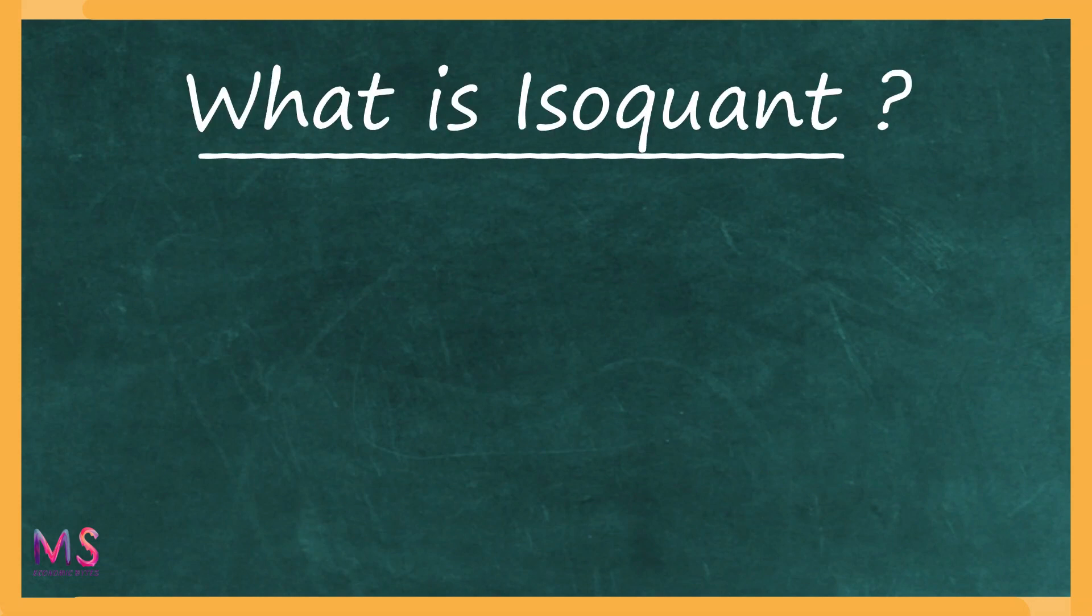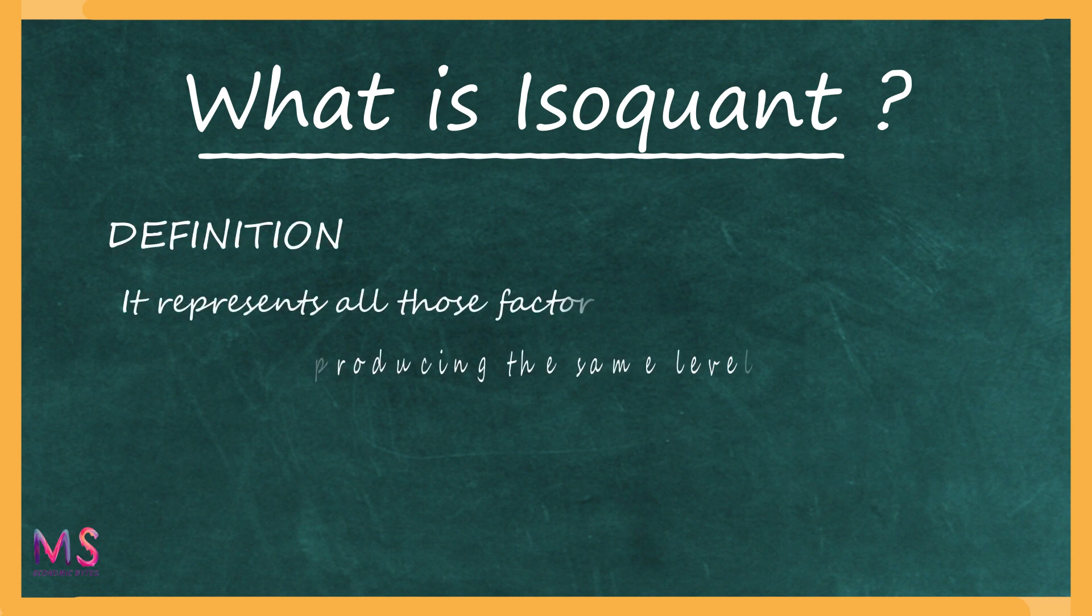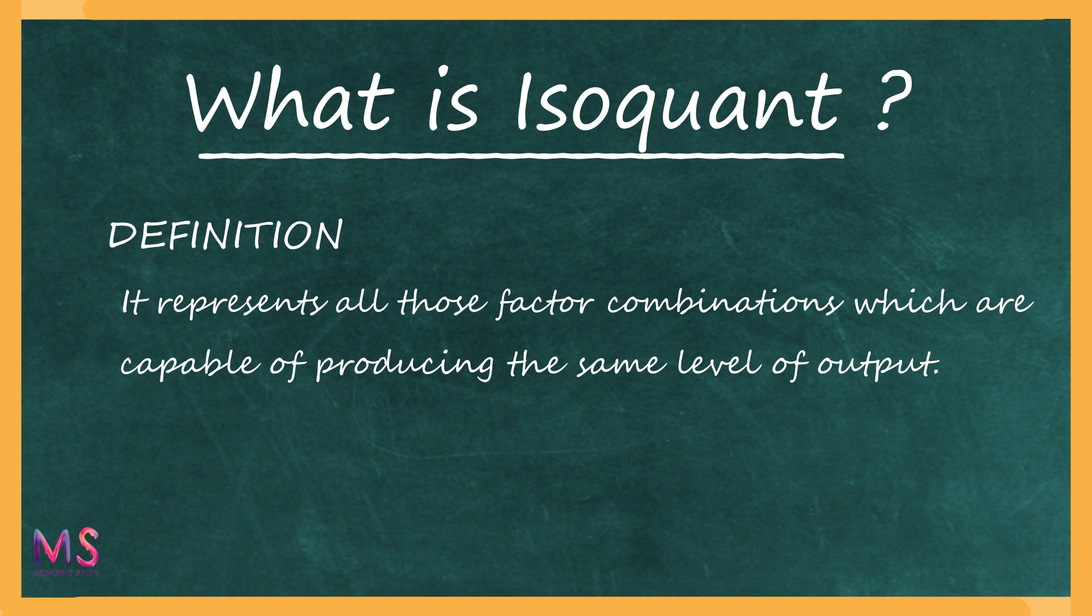Isoquant is an important tool of the production theory. An isoquant represents all those factor combinations which are capable of producing the same level of output.